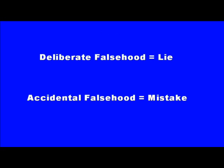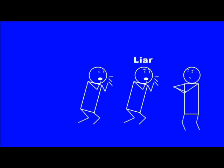First, lies need to be deliberate on at least one person's part. If they're not deliberate, they're mistakes. It can be deliberate on the part of the person talking, or on somebody else's part. In the first case, someone is just lying to you. In the second case, we say they're repeating someone else's lie.